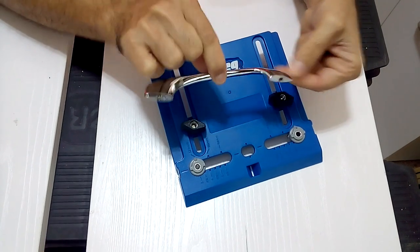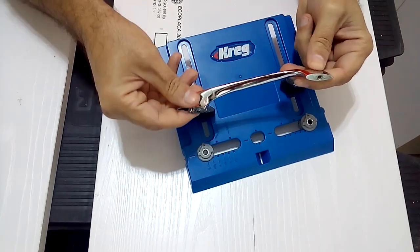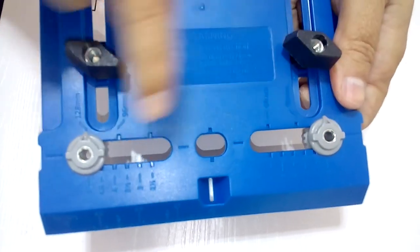We can easily adjust this measure in this great jig. The drill bit with which we will make the holes in our door will enter in these holes.